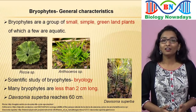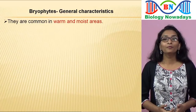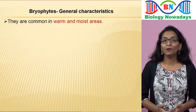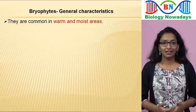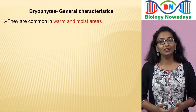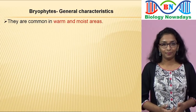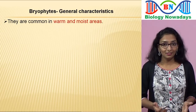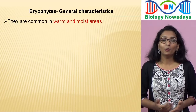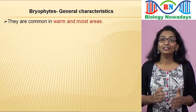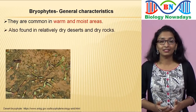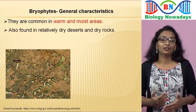The tallest of bryophytes, called Dawsonia superba, reaches up to only 60 cm. Bryophytes are common in warm and moist areas, especially in the tropics and subtropics. But still, they can be found in relatively dry deserts and dry rocks.